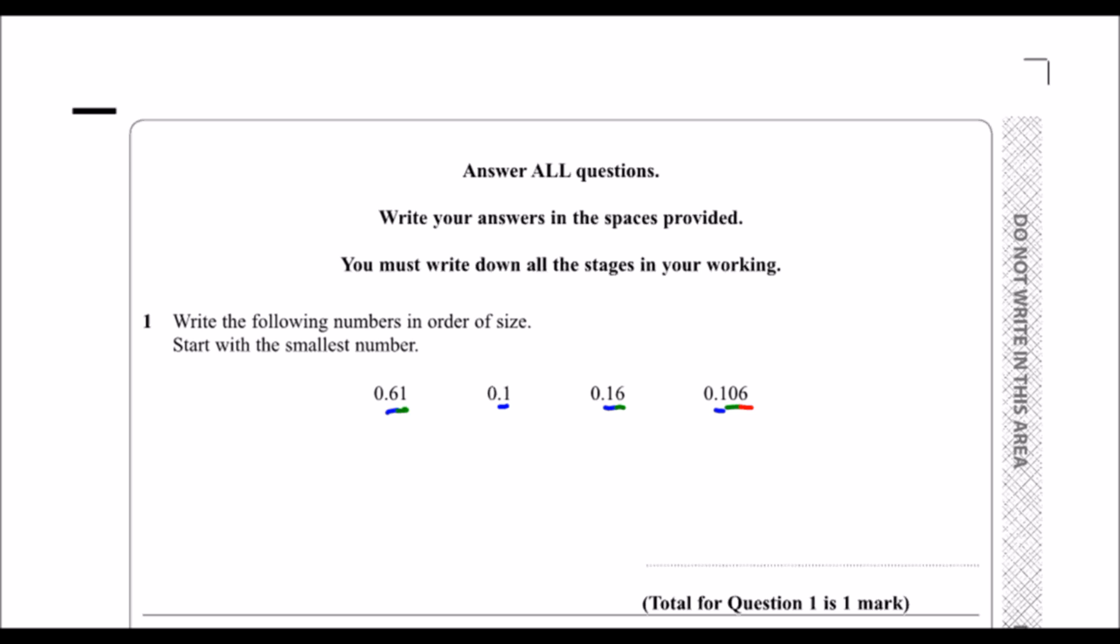So whenever we don't have anything there, that means it's a zero. So this one's got no thousandths, this one's got no tenths and no thousandths, and this one's got no thousandths. So we're just going to write these numbers in order of size now.